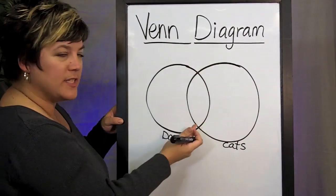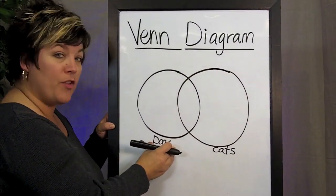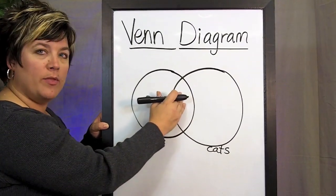And where the two circles intersect, if I have students that like both dogs and cats, they would go in the center.